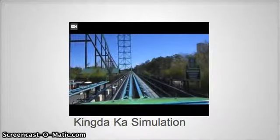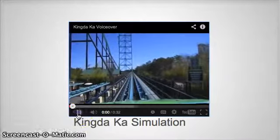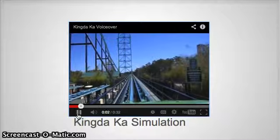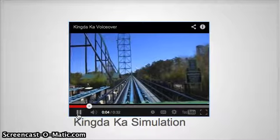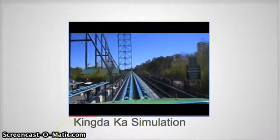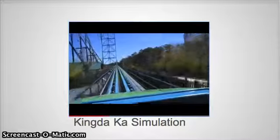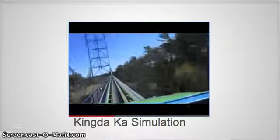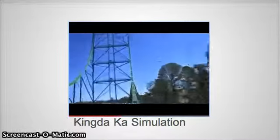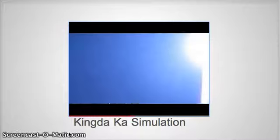Here's a simulation of this concept. In this Kingda Ka simulation, the train car is launched from the starting gate with an initial velocity, giving it kinetic energy, as you can see. This energy allows the car to climb up the track. As it climbs higher, the PE gets greater. At its highest peak, the train car has the most potential energy.